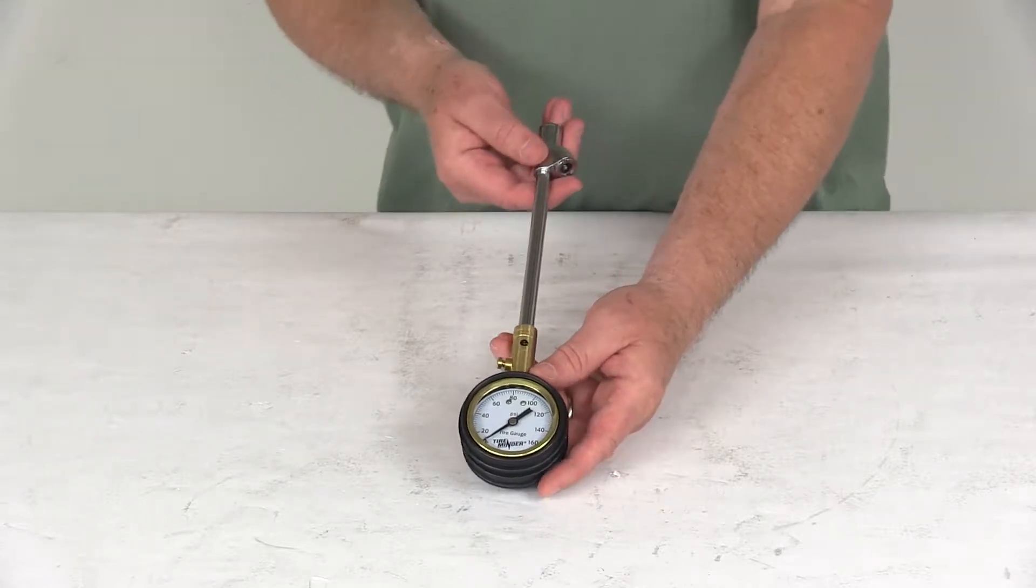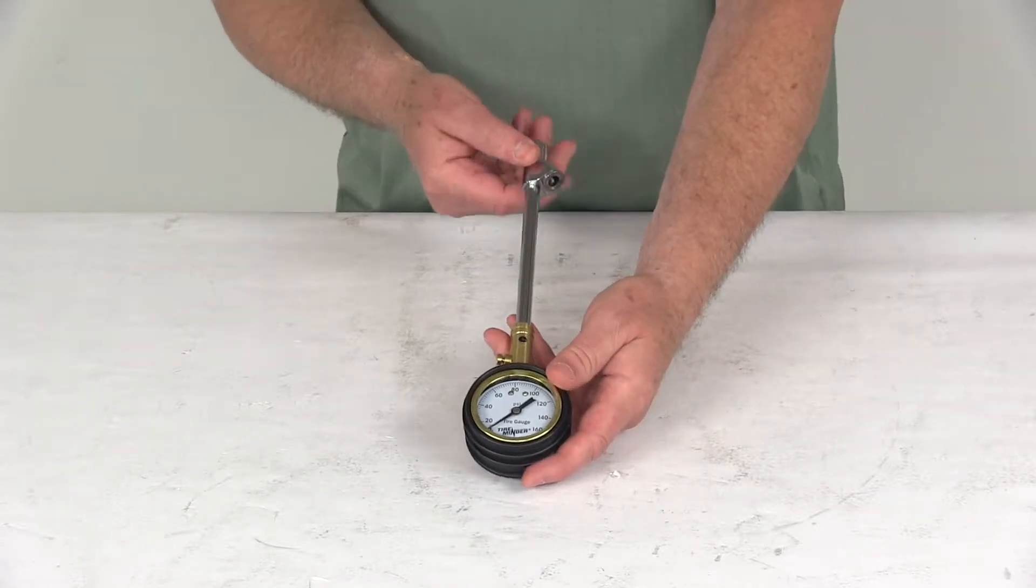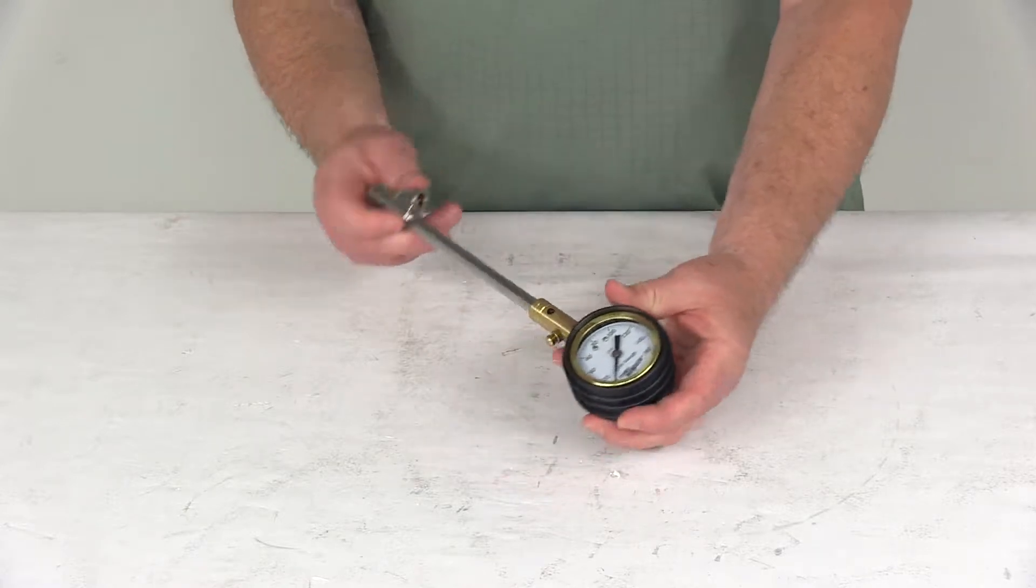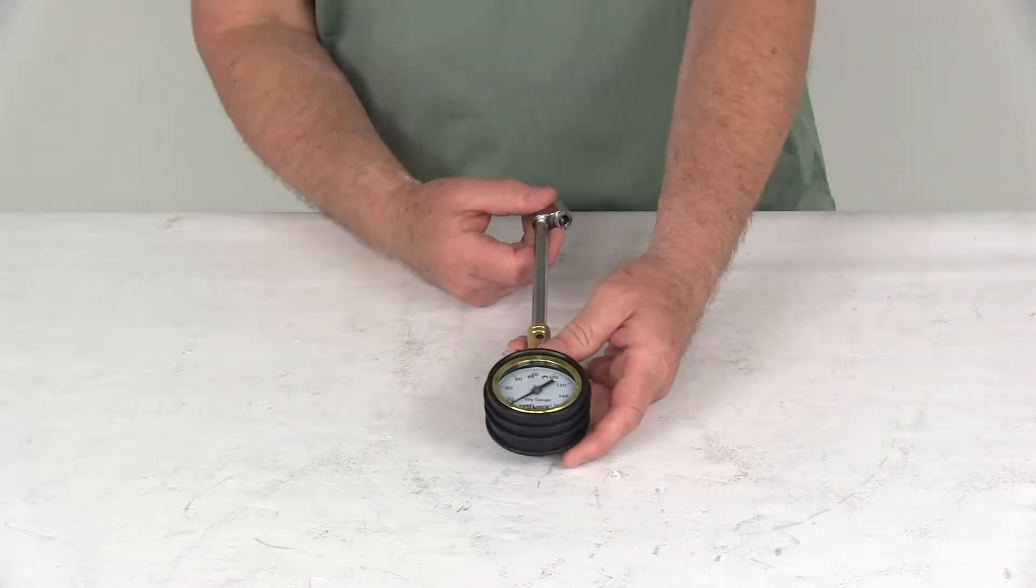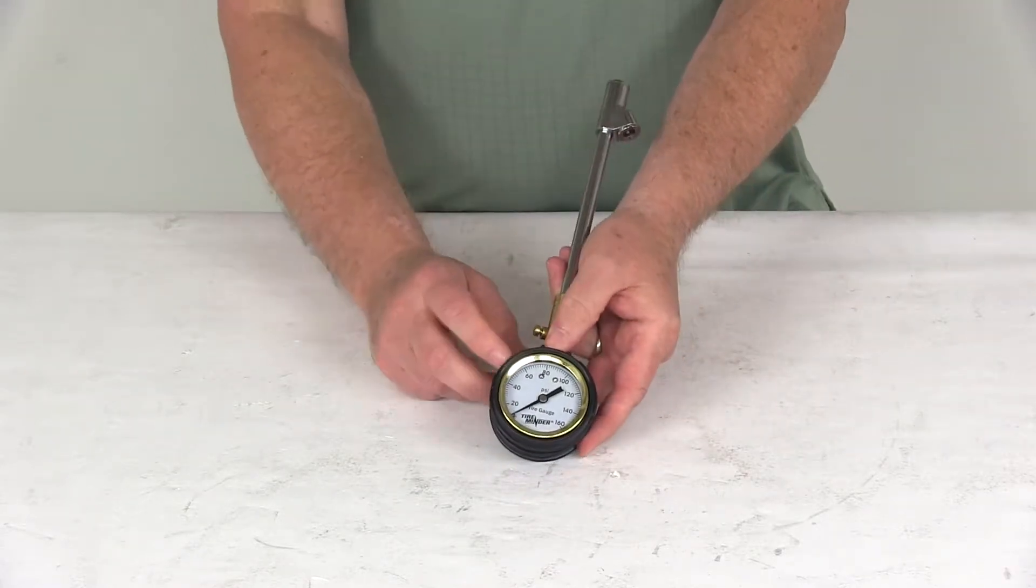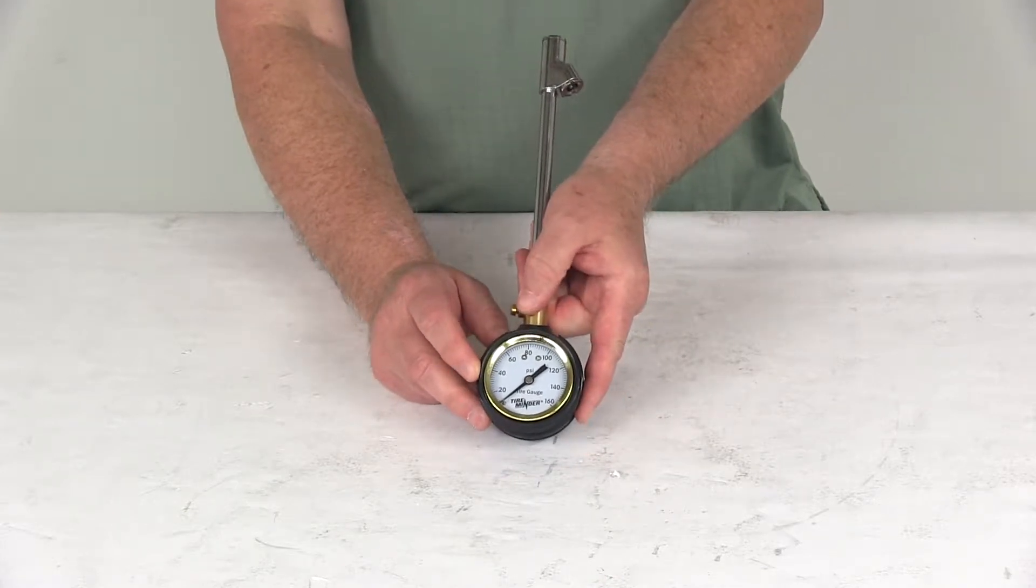Today we're going to take a look at the TireMinder Mechanical Dial Gauge Dual Head Tire Pressure Gauge. This tire gauge offers plus or minus 1 psi accuracy. The pressure range is from 10 to 160 psi.